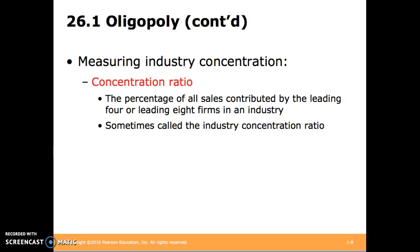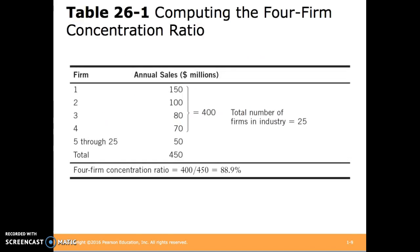So how do we determine whether or not an industry is an oligopoly? We can consider the concentration ratios — the percentage of all sales contributed by the leading four or leading eight firms in an industry, sometimes called the industry concentration ratio. For example, if the top four firms account for $400 million in annual sales and the next 21 firms account for only $50 million in annual sales, the concentration ratio for the top four firms would be 400 divided by 450, or 88.9%.